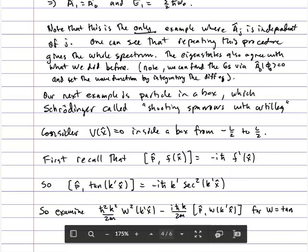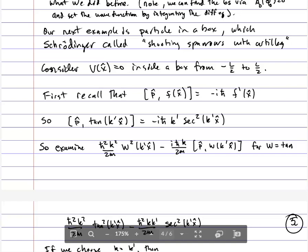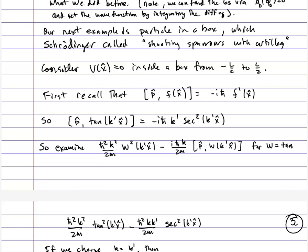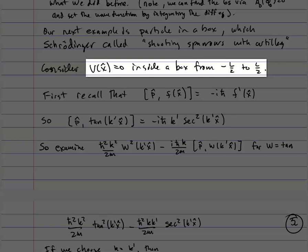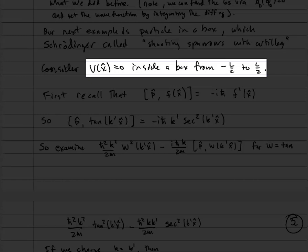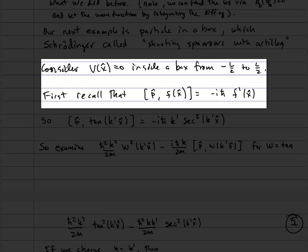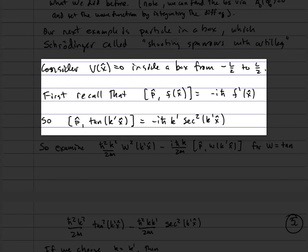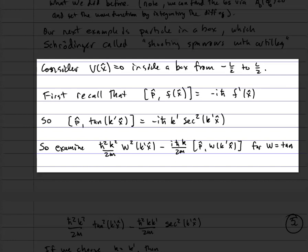Now we're going to do a non-trivial problem: a particle in a box. This problem is actually pretty complicated — particle in a box is one of the harder problems to solve in this method. Schrödinger called it 'shooting sparrows with artillery.' V(x) = 0 inside the box, which runs from −L/2 to L/2. Recall that [p̂, f(x)] = −iℏf'(x), so the commutator of p̂ with tan(k'x̂) is −iℏk' sec²(k'x̂).